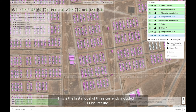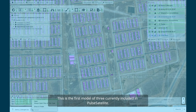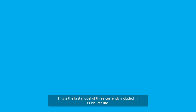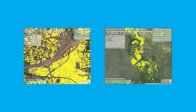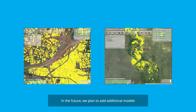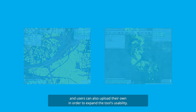This is the first of three models currently included in Pulse Satellite. The other two are roof segmentation and flood mapping models. In the future, we plan to add additional models, and users can also upload their own in order to expand the tool's usability.